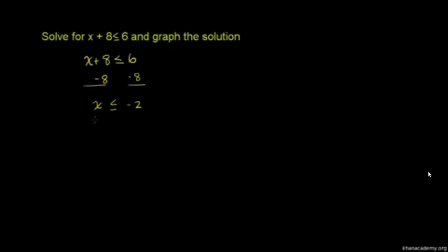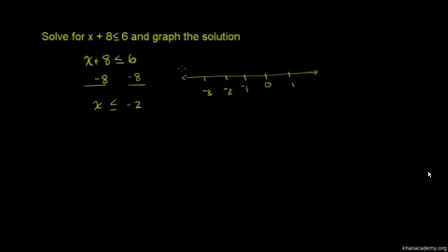And we still have the less than or equal. So we solve the inequality: x is less than or equal to negative 2. Let's draw that on a number line. Let's stick 0 here, then we go 1, negative 1, negative 2, negative 3.